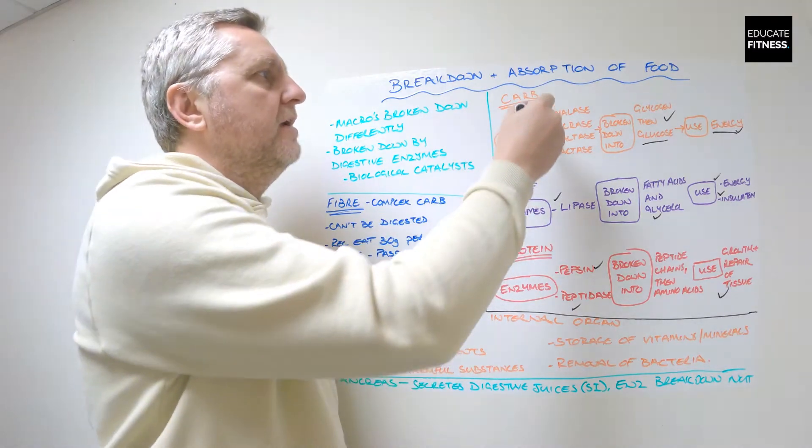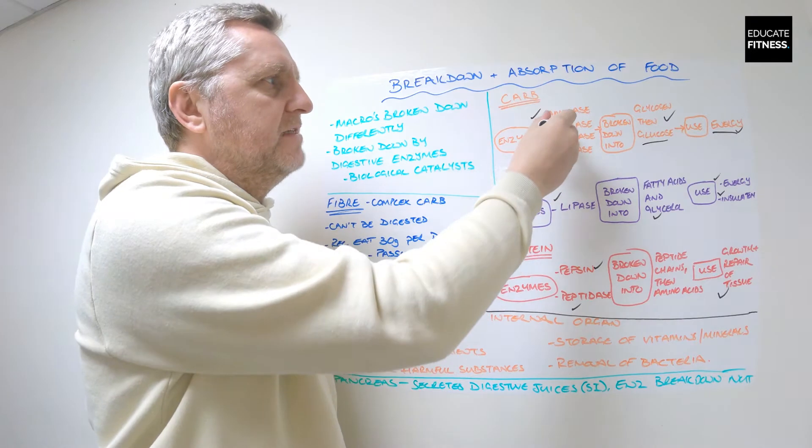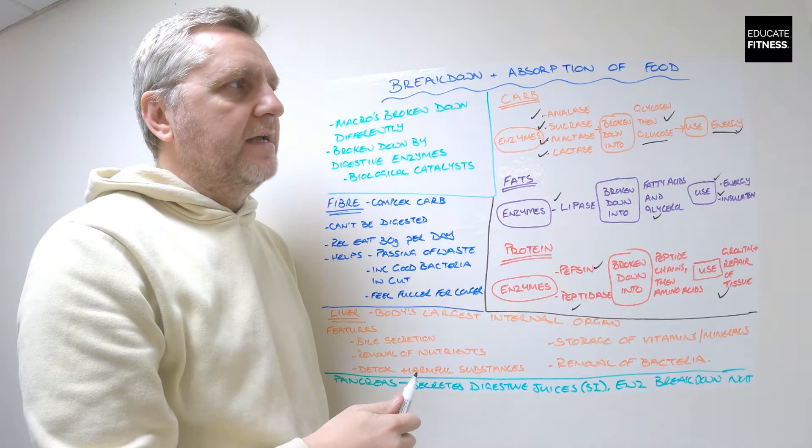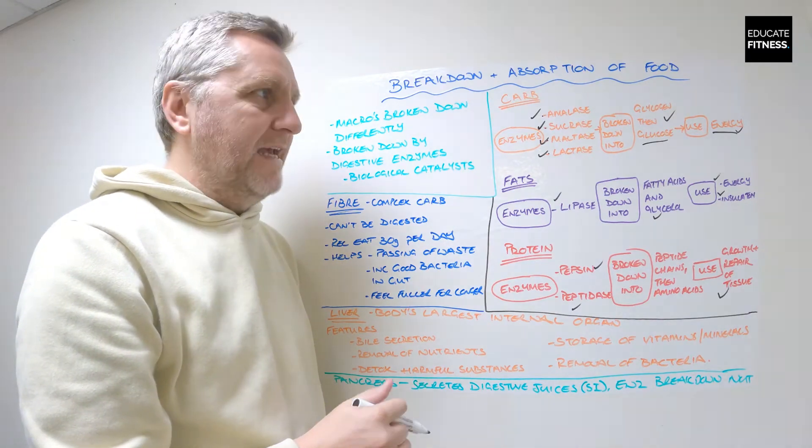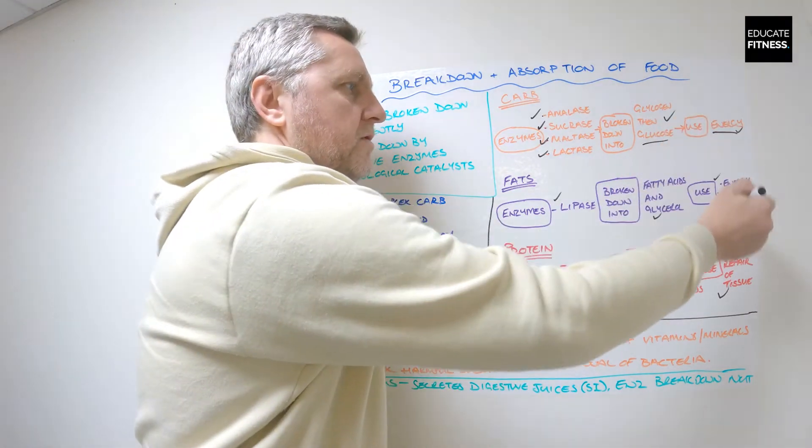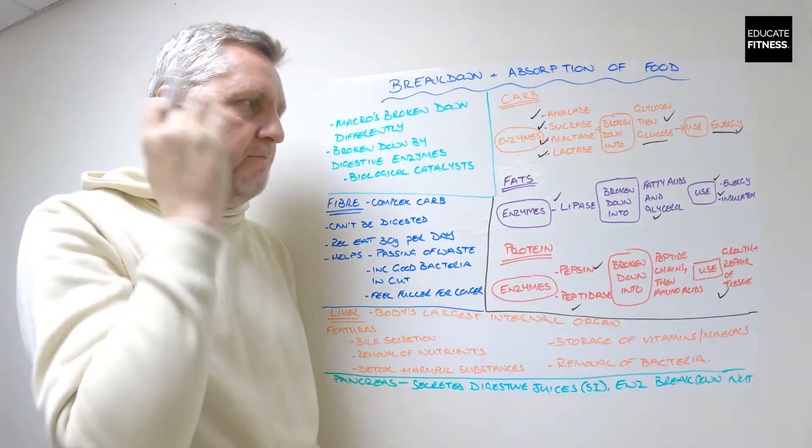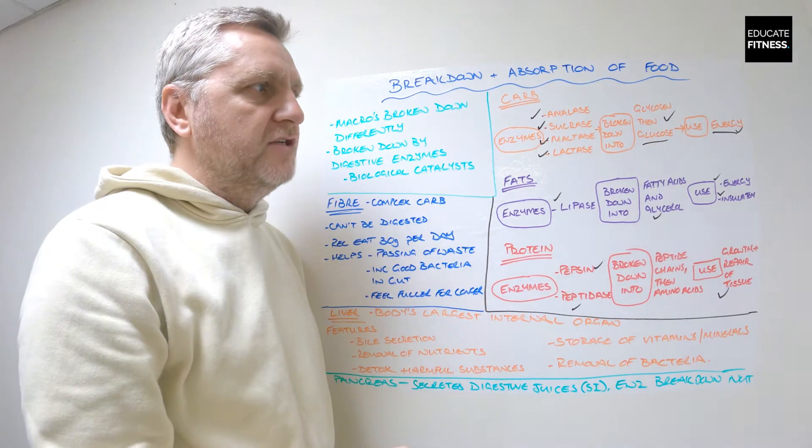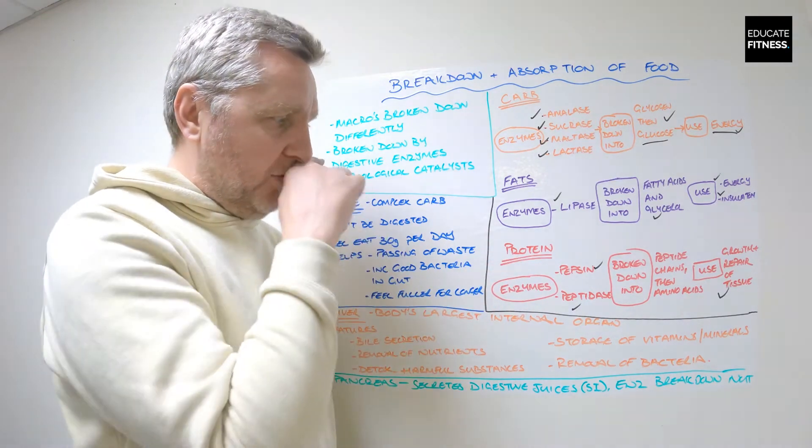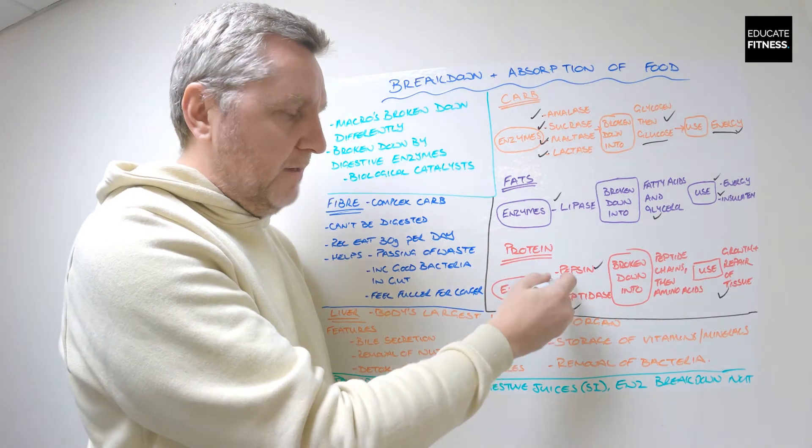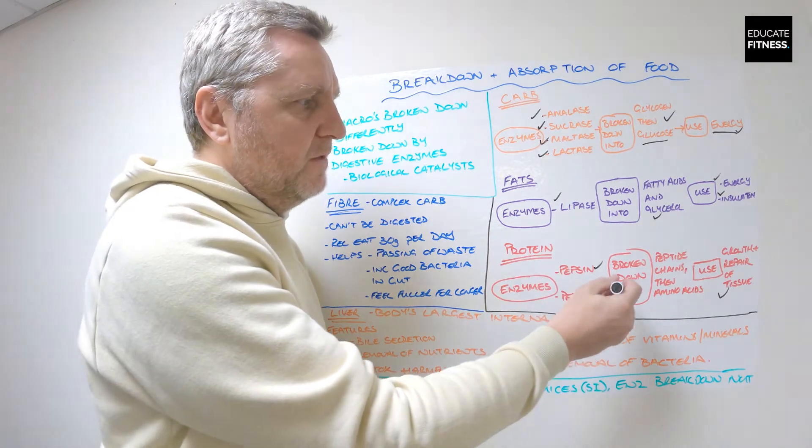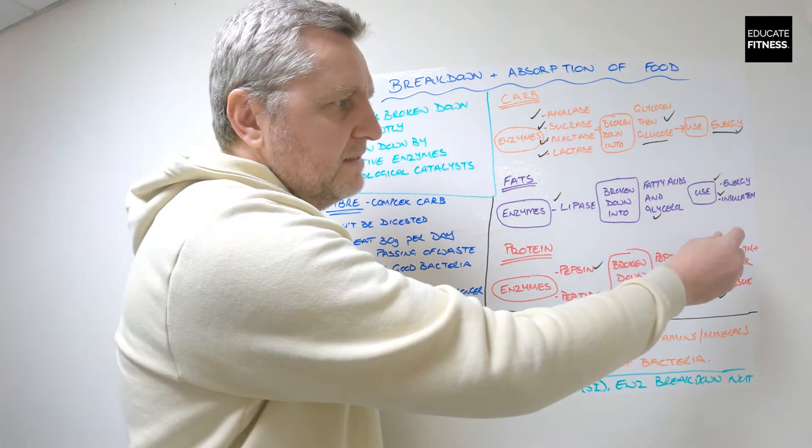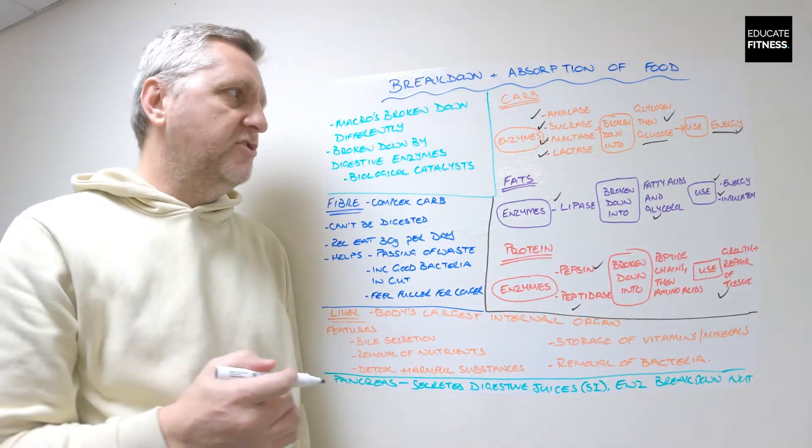But let's try and remember these. Carbs: amylase, sucrase, maltase and lactase, broken down into glycogen then glucose, and the use is energy. This is important. Fats: lipase is the enzyme, broken down into fatty acids and glycerol which is then used for energy and insulation. And finally protein: we've got pepsin and peptidase which is broken down into peptide chains then amino acids, and the use is growth and repair of our bodily tissues.